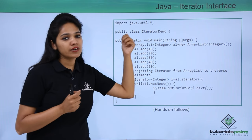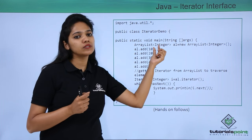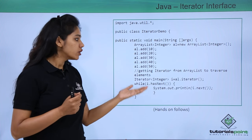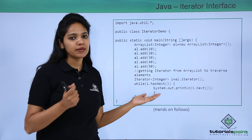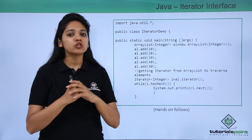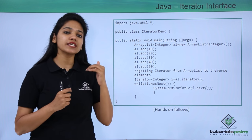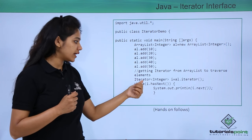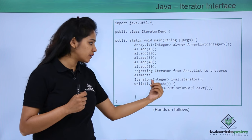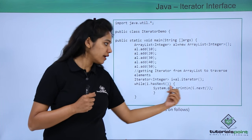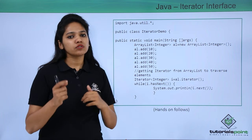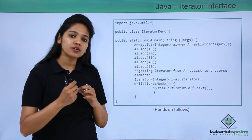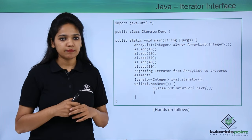This ArrayList of the collection interface is trying to hold integer values — that is, we are defining the generic value. Let us execute this program in practice to understand how you use an iterator to iterate each and every element and then, if there is an element, print it. This is how you use an iterator class to traverse through each and every element.